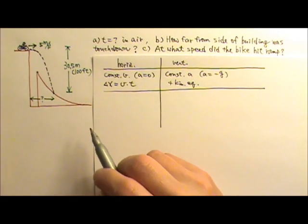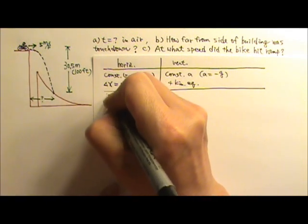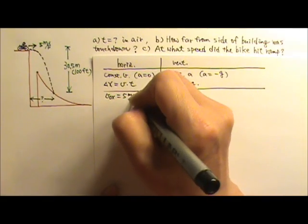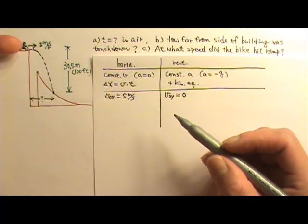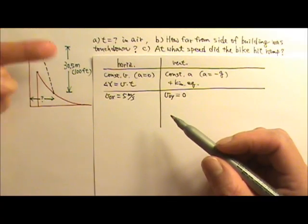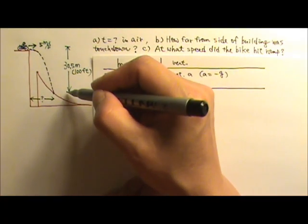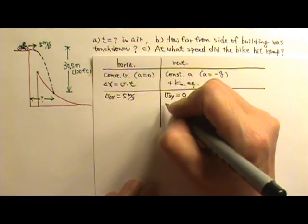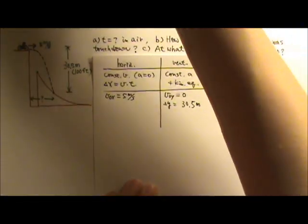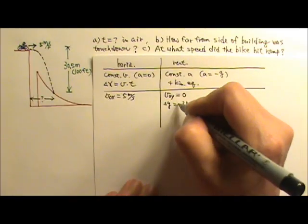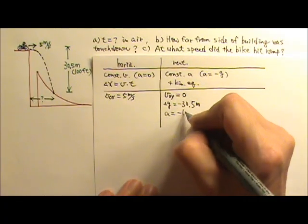Now let's continue with the problem. The motorcycle goes off the building at a horizontal five meters per second. So that is the initial velocity on the horizontal side. The initial velocity on the vertical side is zero because the initial velocity is completely horizontal. It doesn't go up or down. So there is no initial velocity in the y direction. We know that the drop is 30.5 meters. That's the vertical displacement. So that's delta y, 30.5 meters. Because he ends lower, that means the displacement in the vertical direction is a downward negative 30.5 meters. And of course, in the vertical direction, we know the acceleration is negative g.